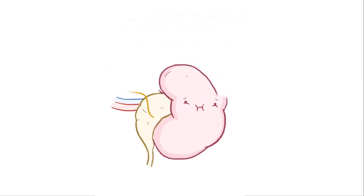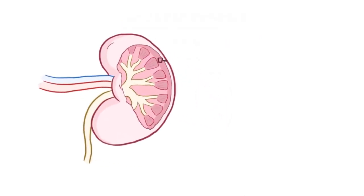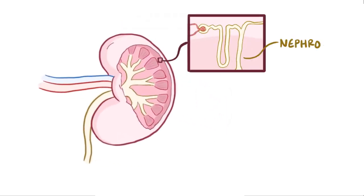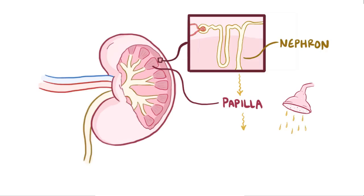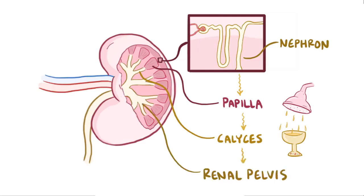Normally inside the kidneys, urine forms in the nephron and then drains through the papilla, which is an inverted cone-shaped pyramid that, like a shower head, pours urine into the calyces — which come from the Latin calyx, meaning large cup, like a Roman chalice. From there it enters the renal pelvis, which funnels the urine into the ureter.